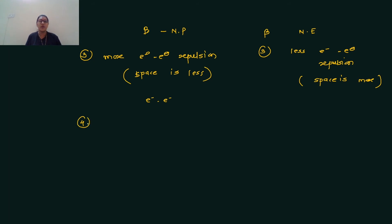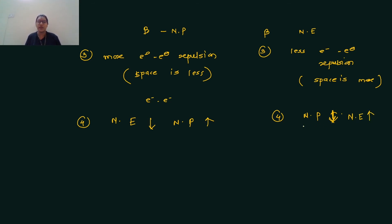Fourth point: when the nephelauxetic effect decreases, the nephelauxetic parameter increases, and vice versa, because both are inversely proportional. Now let's see the order of the ligands for the nephelauxetic parameter and the nephelauxetic effect.